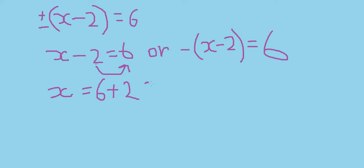For this side, we are going to open the brackets. Negative 1 times x is negative x. Negative 1 times negative 2 is positive 2. So negative x plus 2 equals to 6.